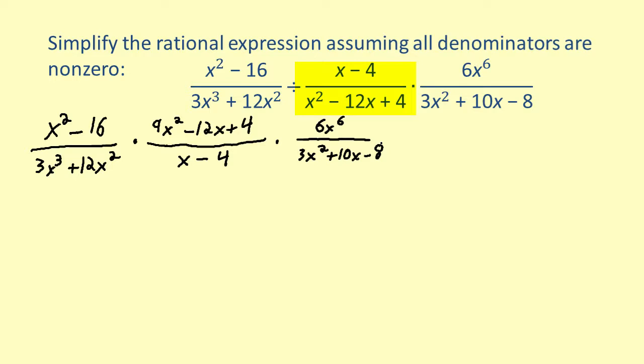We will start by factoring the first term. The numerator can be factored using the formula for a difference of squares. The result is (x + 4)(x - 4). To factor the denominator, remove the common factor 3x² from both terms. The denominator becomes 3x²(x + 4). The first term is now in complete factored form.